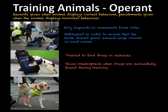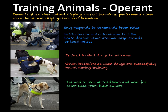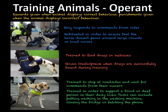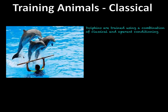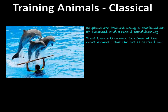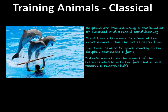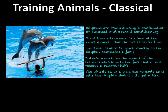Guide dogs are trained to stop at a roadside and wait for a command — they've been operantly trained to display the correct behaviour to support a blind or deaf person. Some animals are still trained using classical conditioning or a combination of both. An example is the training of dolphins: a treat cannot always be given at the exact moment an act is completed, so a dolphin can't be rewarded with fish at the exact moment it does a jump. Instead, the dolphin associates the sound of the trainer's whistle with the fact that it will get the fish.